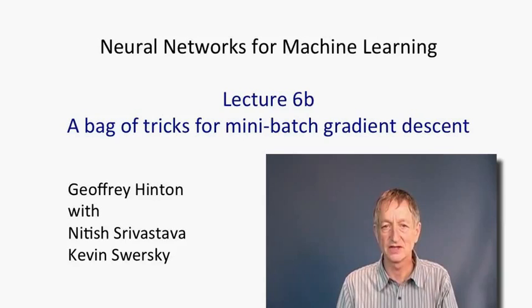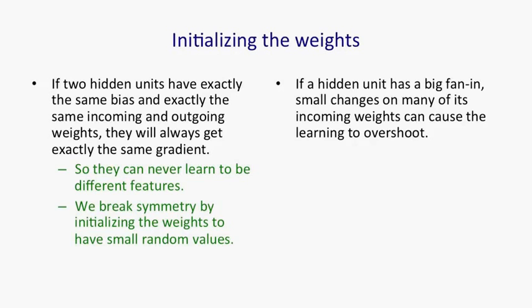The first issue I want to talk about is initializing the weights of a neural network. If two hidden units have exactly the same weights and same biases, both incoming and outgoing, then they can never become different from one another because they will always get exactly the same gradient. So to allow them to learn different feature detectors, you need to start them off different from one another. We do this by using small random weights to initialize the weights. That breaks the symmetry.